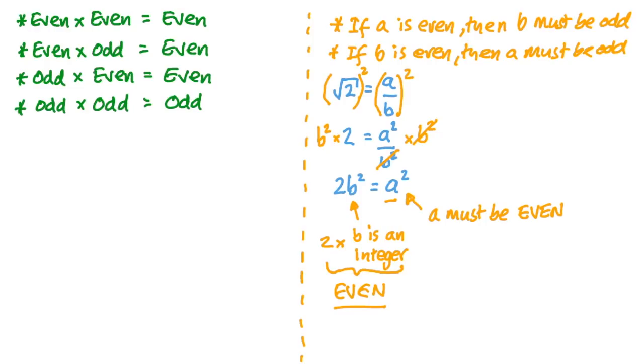So back to our problem. We had 2b squared equals a squared. Now, we said that the left-hand side, because b is an integer, must be an even number. And the right-hand side is equal to a squared, which is something times itself. So we're either dealing with an even number times an even number, or an odd number times an odd number. Now, the only way we can get an even result is if a was even. So this is definitely true.